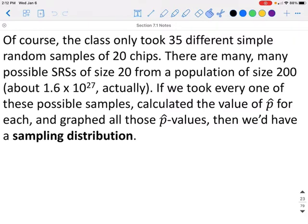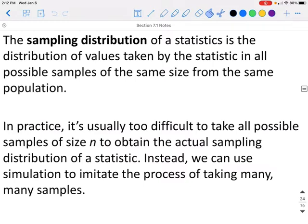You only have the sampling distribution if you find all possible samples of your sample size. The sampling distribution of a statistic is the distribution of values taken by the statistic in all possible samples of the same size from the same population.